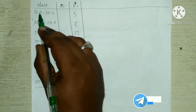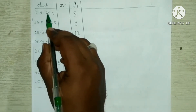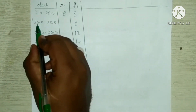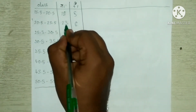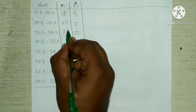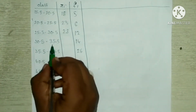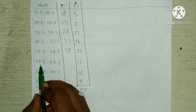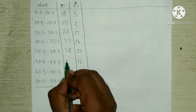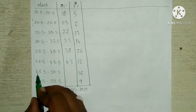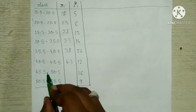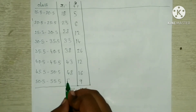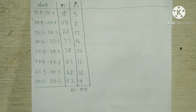Now find the midpoints x for each class: midpoint of 15.5–20.5 is 18; midpoint of 20.5–25.5 is 23; midpoint of 25.5–30.5 is 28; midpoint of 30.5–35.5 is 33; midpoint of 35.5–40.5 is 38; midpoint of 40.5–45.5 is 43; midpoint of 45.5–50.5 is 48; midpoint of 50.5–55.5 is 53.